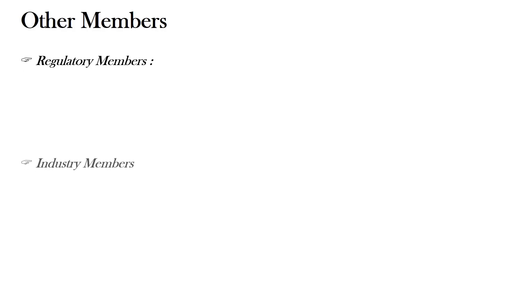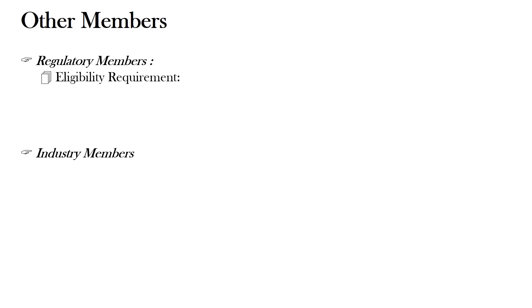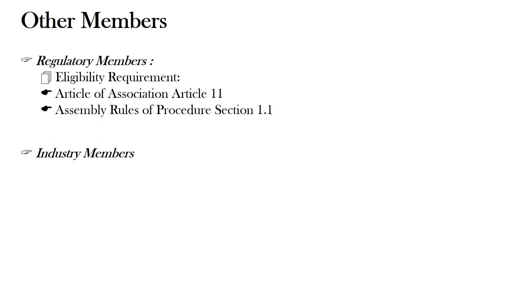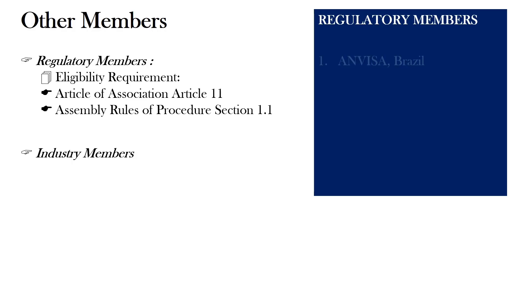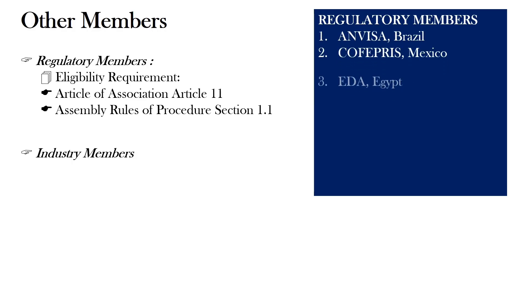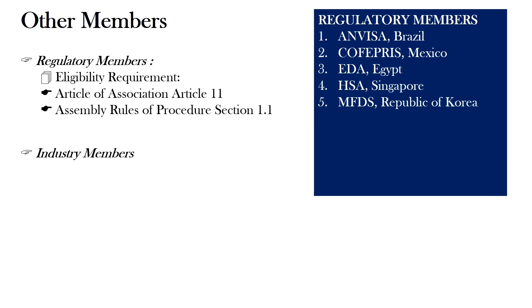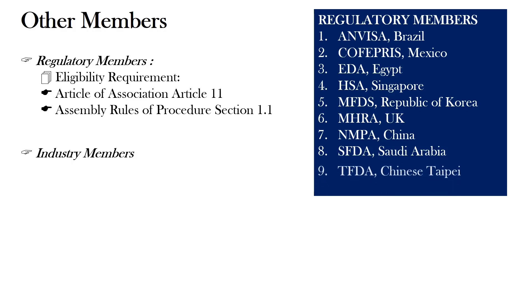The other members of ICH are regulatory members and industry members. The eligibility requirements for regulatory members are given in Article of Association Article 11 and Assembly Rules of Procedure Section 1.1. Currently, there are 10 regulatory members of ICH. These are Brazil, Mexico, Egypt, Singapore, Republic of Korea, United Kingdom, China, Saudi Arabia, Chinese Taipei, and Turkey.